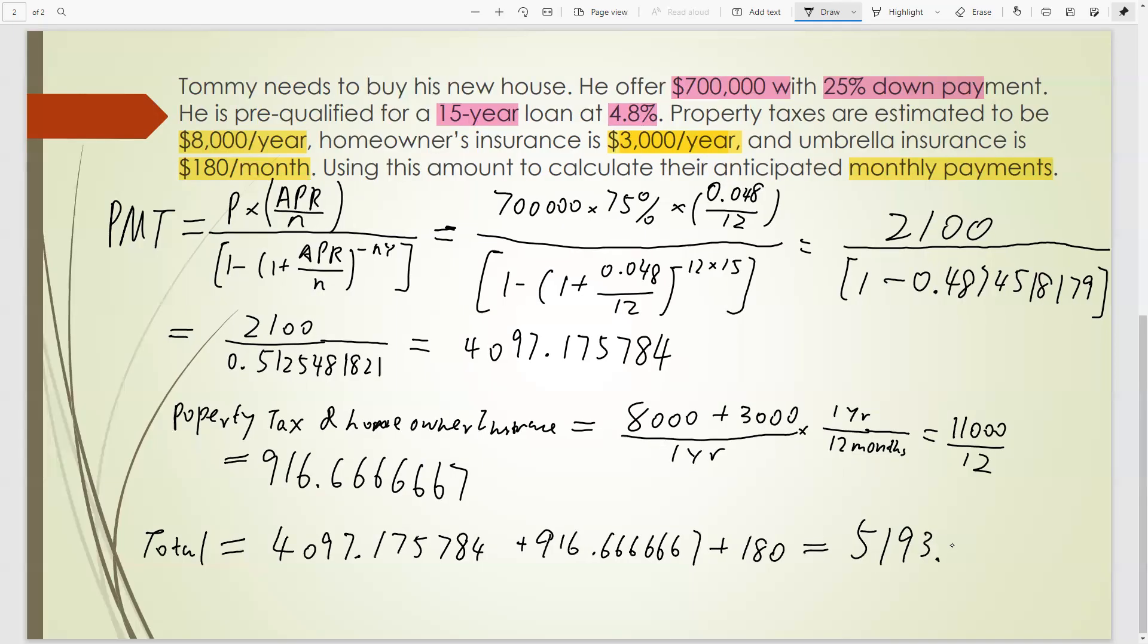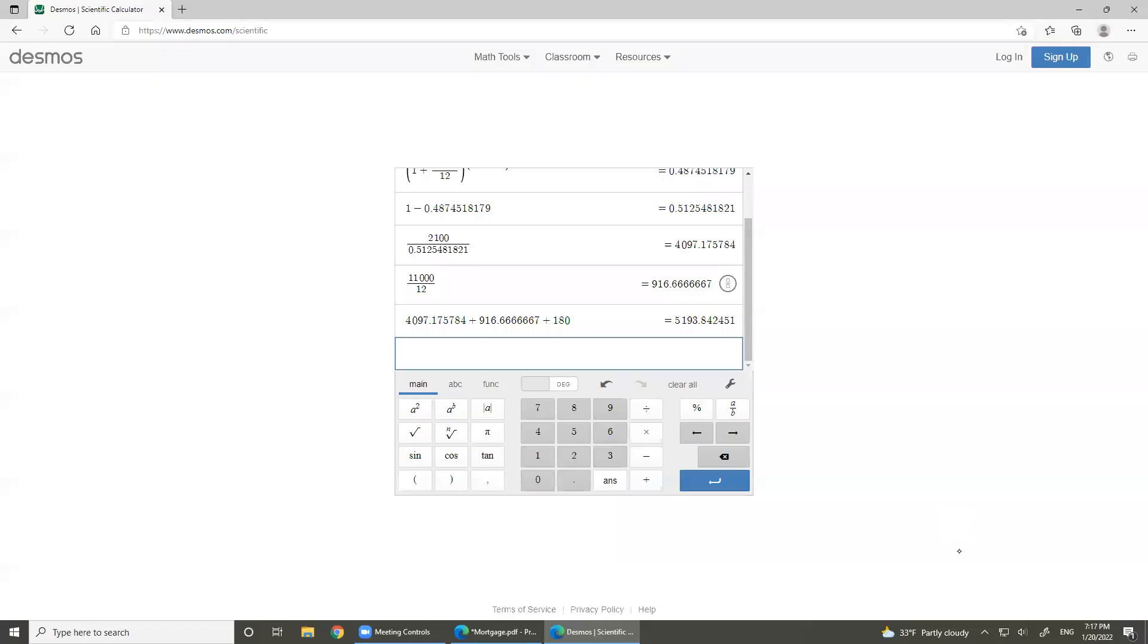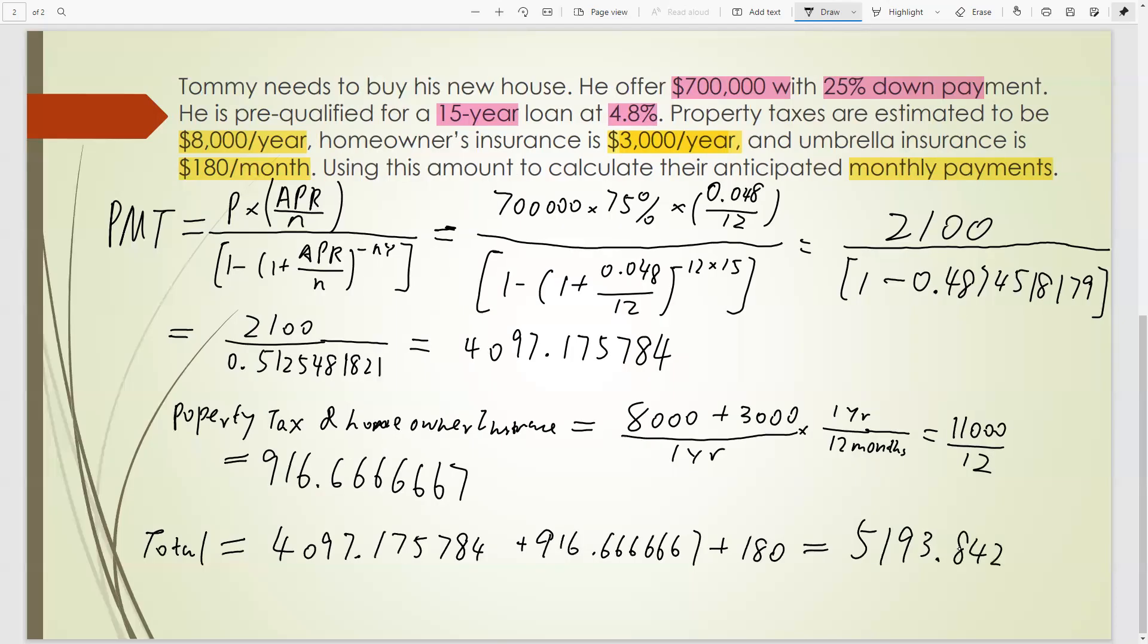So far we keep all the digits of decimal, right? That could be everything to be most accurate. At the end, that's $5,193.84 monthly payment. How much Tommy needs to pay? So mortgage, property tax, home loan insurance, and umbrella insurance. So in the middle, we keep all the digit decimal. But even though that's not finalized amount, you can still keep like three or four digits decimal. That will have less effect if you want.